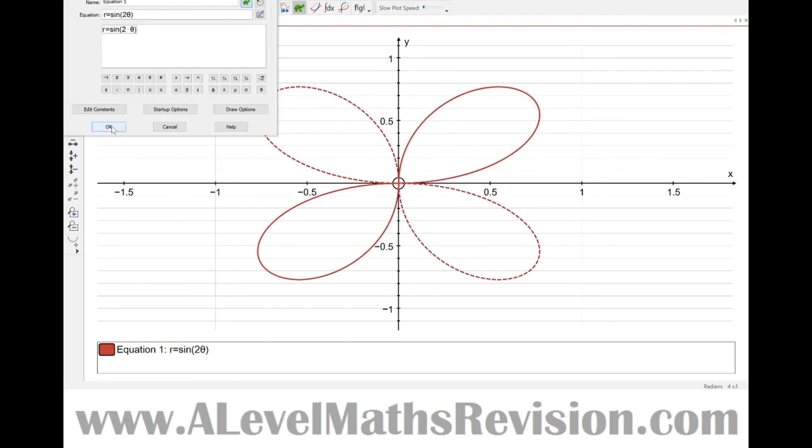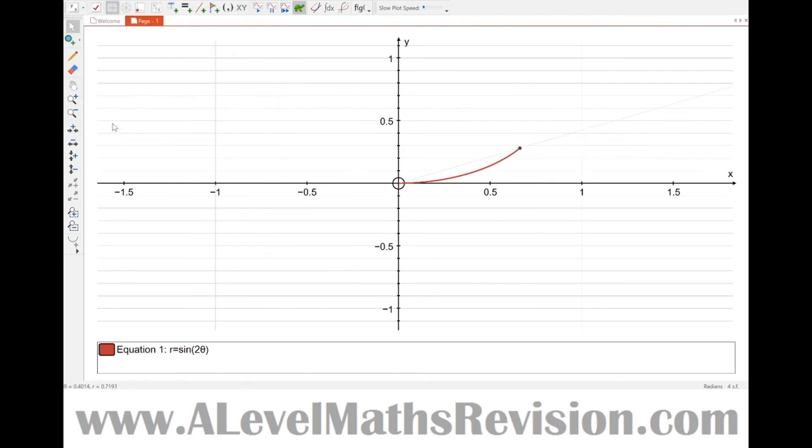But we'll just see this animation happen now. So we'll start with theta equals 0, distance 0 from the origin. Now it's pi over 4, distance 1. Pi over 2, distance 0.